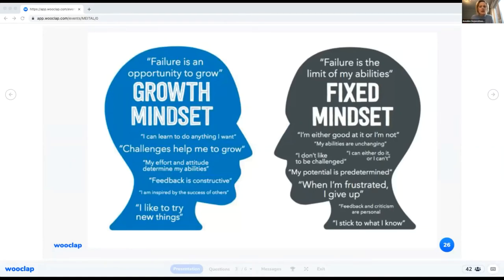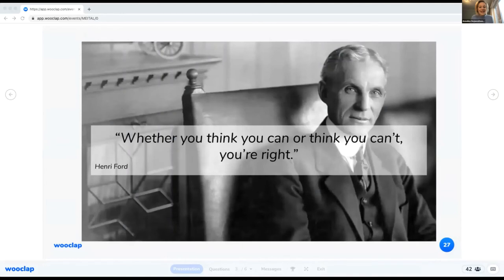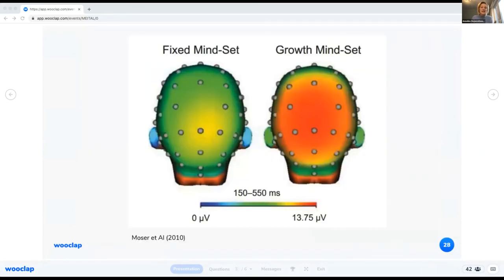All right, finally the third technique we're going to go over is having to believe that someone can improve, having a growth mindset. Really the opposite of having a fixed mindset. A fixed mindset will say that I'm either good at it or not, or I can either do it or I don't. Whereas a growth mindset will think in terms of, hey, if I fail I really see an opportunity to grow. So my effort and my attitude is determining my abilities. And the challenges I am able to overcome will help me grow.